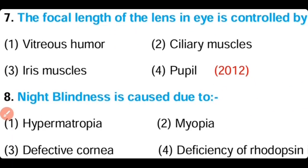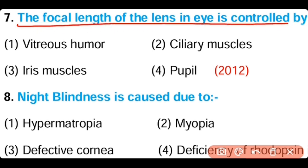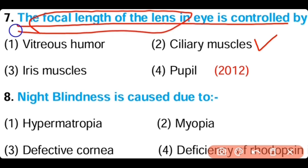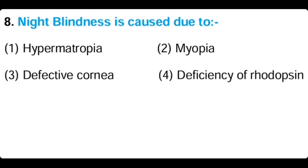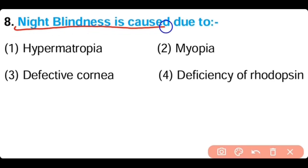Question number seven: The focal length of the lens in the eye is controlled by (a) vitreous humor, (b) ciliary muscles, (c) iris muscles, (d) pupil. The answer is option two — the focal length of the lens in our eye is controlled by ciliary muscles. Question number eight: Night blindness is caused due to (a) hypermetropia, (b) myopia, (c) defective cornea, (d) deficiency of rhodopsin. The answer is option D.